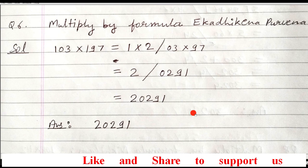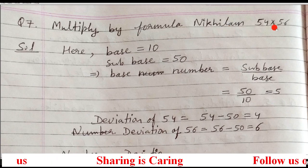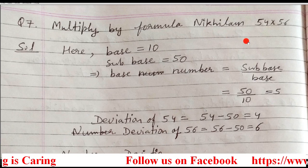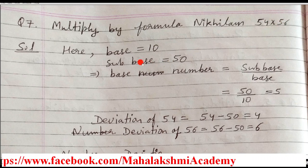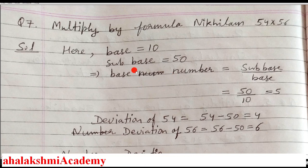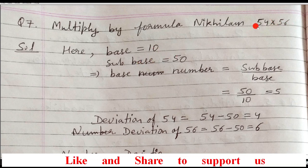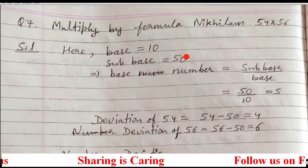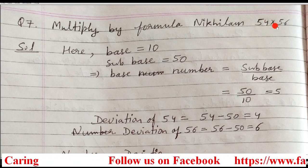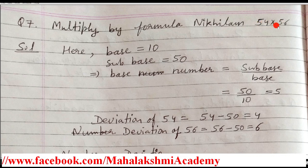Now we'll move to the next method — multiplication by the Nikhilam method. In Nikhilam method, the question is 54 multiplied by 56. There are some numbers we have to find before doing the multiplication: the base, subbase, and base number. These numbers 54 and 56 are near to 10, so base is 10. They are in the 50s, so subbase is 50. The base number formula is subbase divided by base: 50 divided by 10 equals 5.